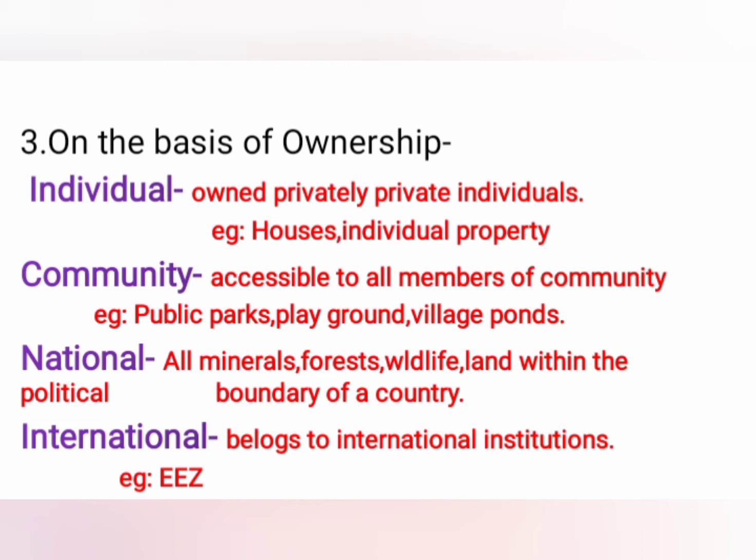The second is community resources — resources accessible to all members of the community. Examples include public parks, picnic spots, playgrounds, etc., in an urban area that are accessible to all people living there. The third is national resources — roads, railways, and buildings constructed by the government. The nation has legal powers to acquire even private properties. All minerals, water resources, forest, wildlife, and land within the political boundary of a country can be considered national resources. The oceanic area up to 22 km or 12 nautical miles is also considered national resource.